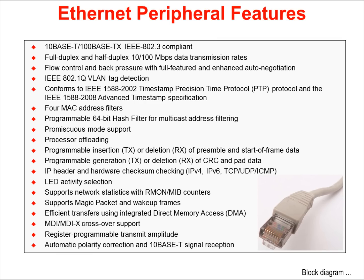There are four MAC address filters to offload the CPU from handling every Ethernet transaction. The module supports both IPv4 and IPv6. A DMA controller is integrated into the Ethernet module — it acts as a DMA master and does not need to be serviced by the DMA module. Crossover support and automatic polarity correction are also included.